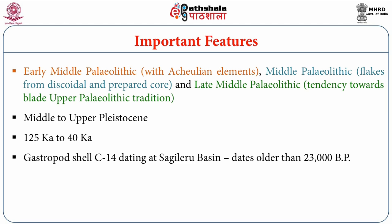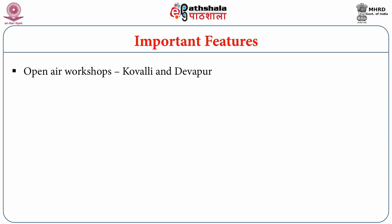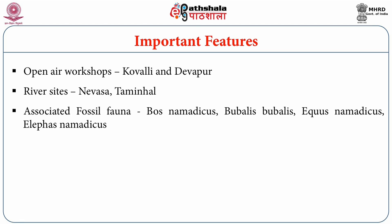In some Middle Paleolithic sites, gastropod shells have also been obtained giving a date of about 23,000 BC. During the Middle Paleolithic period, these communities for the first time occupied caves and rock shelters — for example, Bhimbetka and Adamgarh in the Vindhya Basin. Open-air workshop sites have been identified at a number of sites in the Kaladgi Basin, with Kovali being one good example. Riverine sites include Navasa in the Pravara Valley and Taminhal in the Malaprabha Valley. The gravels containing Middle Paleolithic tools have also yielded animal fossil bones of Bos, Bubalus, Equus, and elephant fossils of the Elephas namadicus variety.